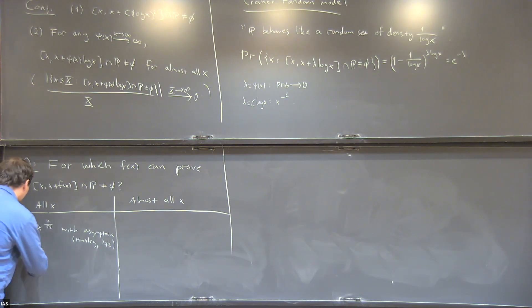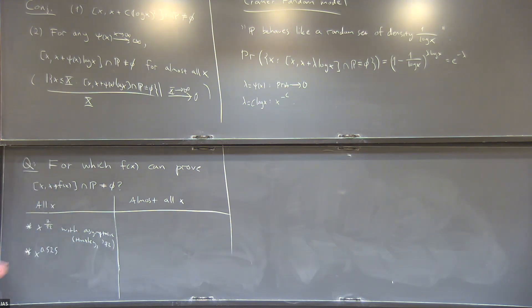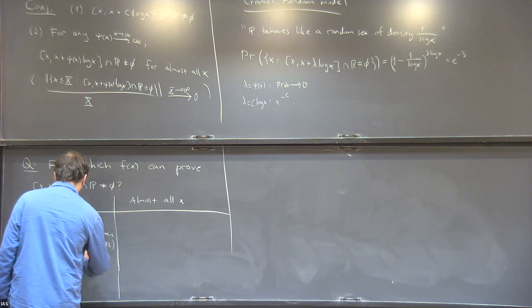If you only want a lower bound, not an asymptotic, you can do a bit better. So X to the 0.525 is the shortest interval length that's known to always contain primes unconditionally. That is by Baker, Harman, and Pintz from 2001.